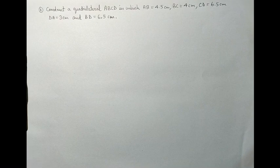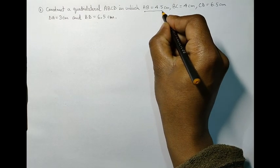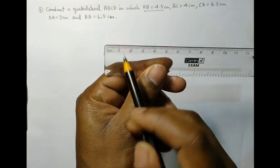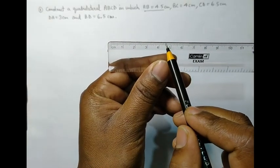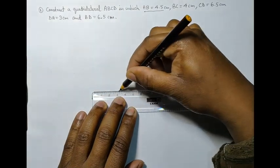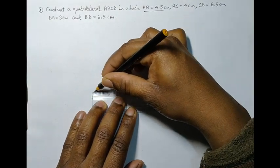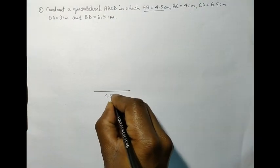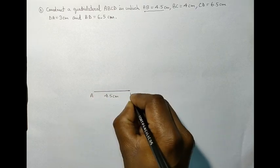Let's begin. Let's take the first measurement that is given AB equals to 4.5 cm and draw it using the ruler and pencil. So here we have 4.5 cm. Let's mark the endpoints.